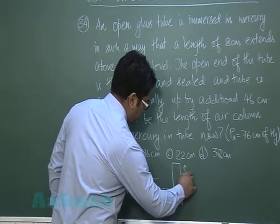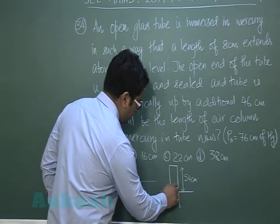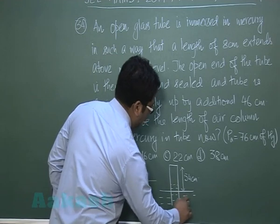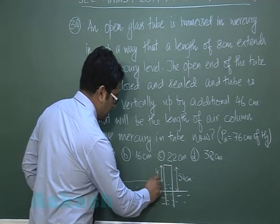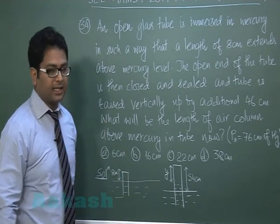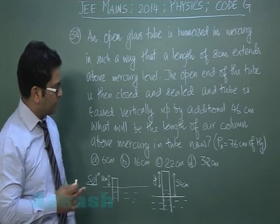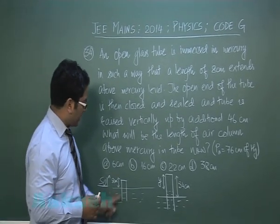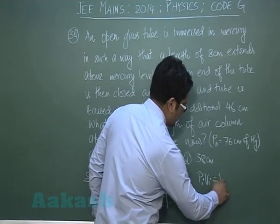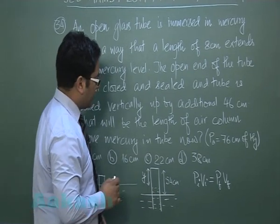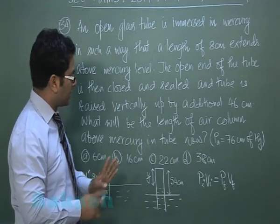After raising, the total tube length above mercury is 8 + 46 = 54 cm. Mercury rises inside the tube, and we call the air column length y with cross-sectional area A. Temperature is assumed constant, so we apply Boyle's Law: P₁V₁ = P₂V₂. Initial pressure is 76 cm of mercury, initial volume is 8A. The mercury column inside becomes (54 − y), so the final pressure is 76 − (54 − y).